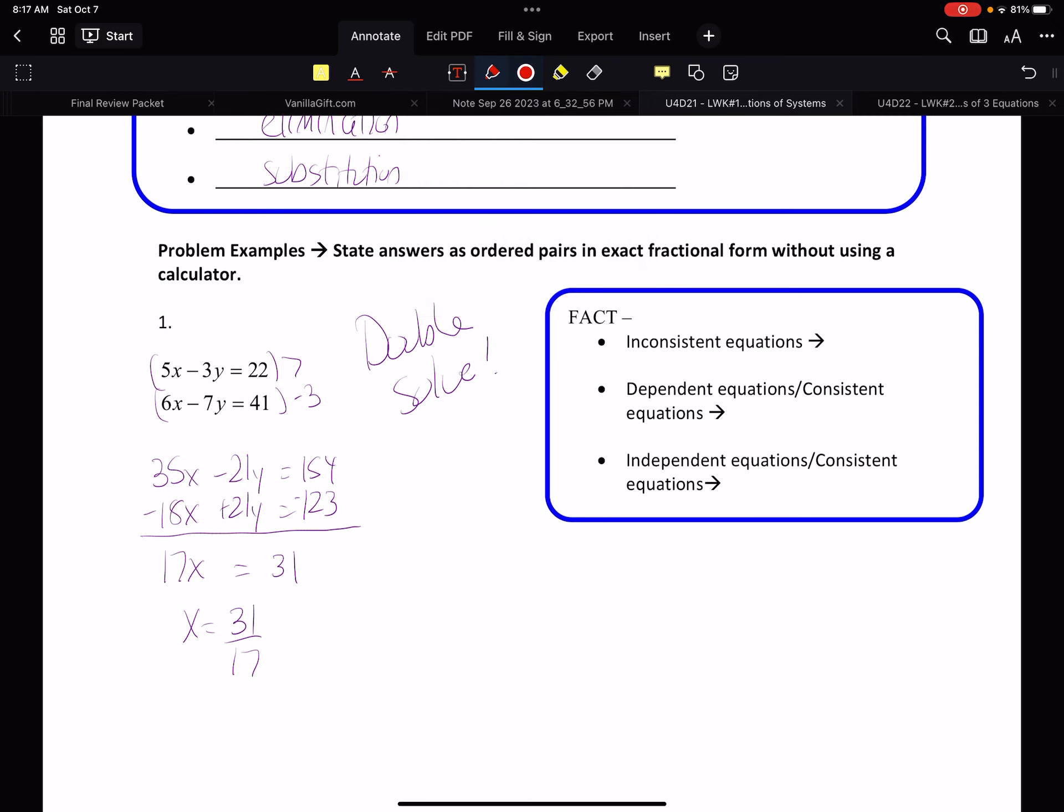Why work with 31 over 17 when we can just solve it again? So if I solve it again, multiply the top by negative 6, the bottom by 5, I'm keeping my numbers manageable again. So negative 30x plus 18y equals negative 132 over 30x minus 35y equals 205. My x's cancel out. I'm left with negative 17y equals 73. Y equals negative 73 over 17.